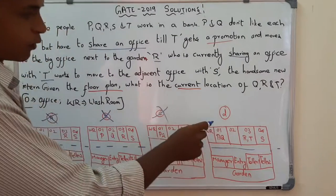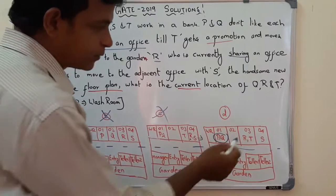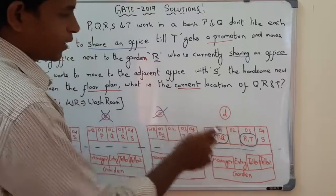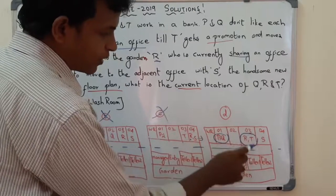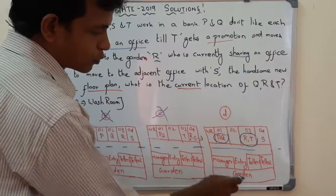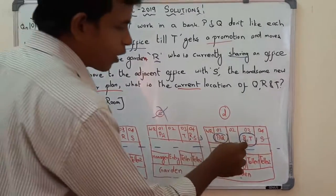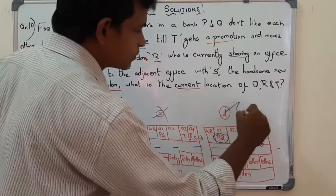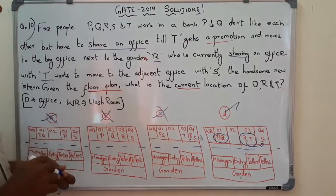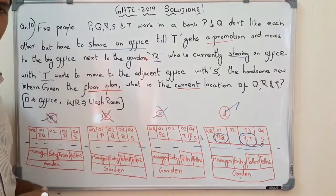Looking at option D: P and Q are in the same office — they don't like each other but share it. R is sharing an office with T. T will get a promotion and move to the office opposite the garden. And S is in a separate office where R wants to move. Option D perfectly matches all the conditions given in the question. So the right answer is option D.